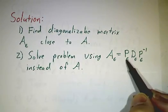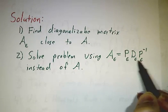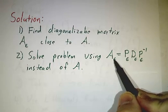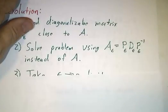And then we can diagonalize it. We can write it as PDP inverse, where P and D and P inverse depend on epsilon, and then we solve the problem in terms of A epsilon. Now that isn't exactly a solution.